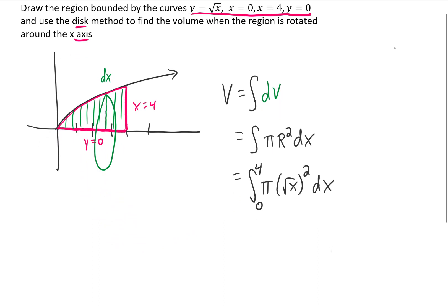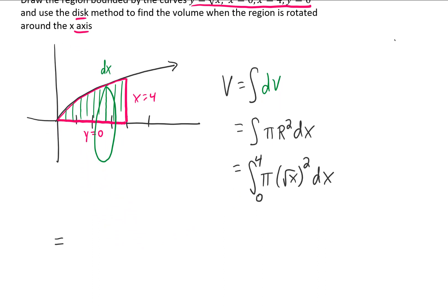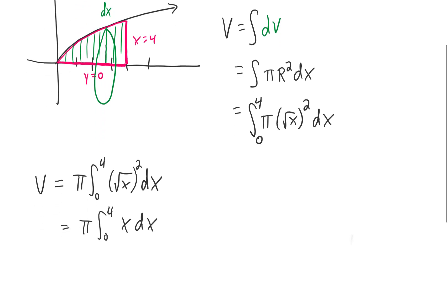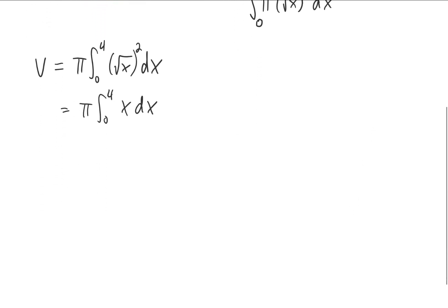Now this integral should be slightly simpler than the previous integrals that we've done, because we know that the square root of x squared is just x. Integrating x with respect to x just gives us a one half x squared, and evaluating that from 0 to 4 should simplify down pretty well for us.